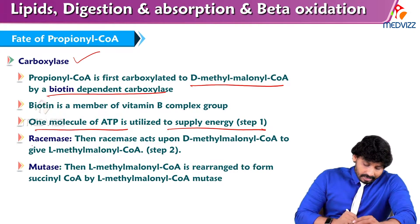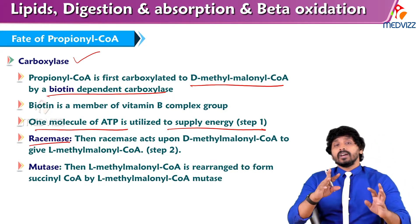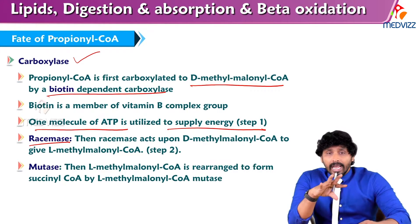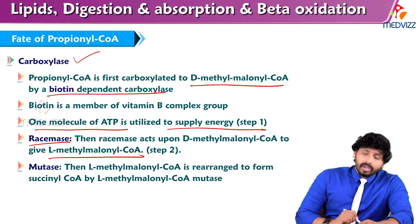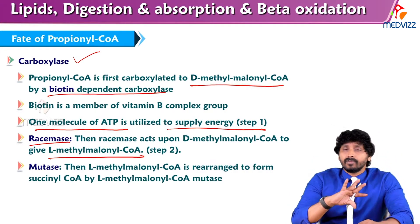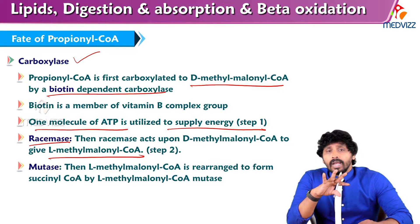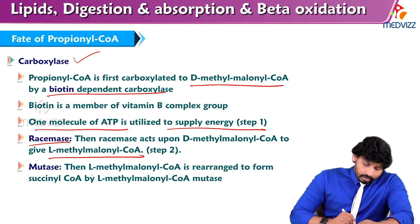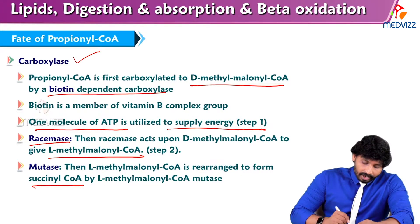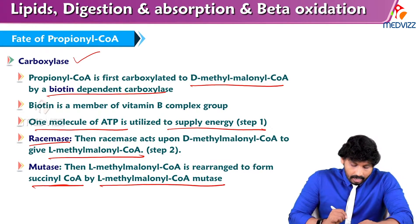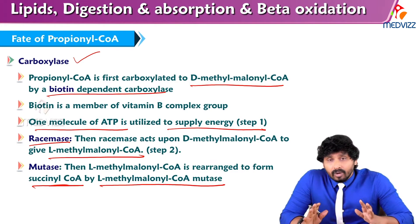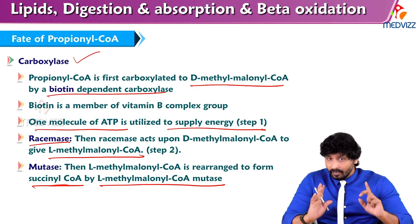Racemase then converts D-methylmalonyl-CoA into L-methylmalonyl-CoA — that is, the D form of methylmalonyl-CoA is converted to the L form. And mutase does what? L-methylmalonyl-CoA is rearranged to form succinyl-CoA by L-methylmalonyl-CoA mutase. So L-methylmalonyl-CoA is rearranged to form succinyl-CoA.